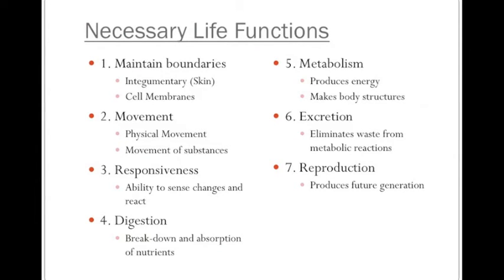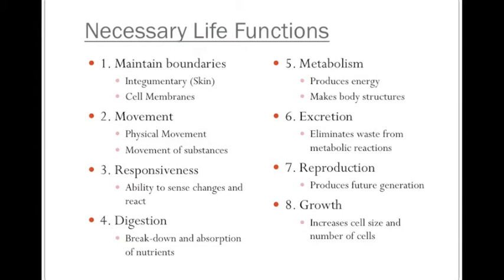Number seven would be our ability to reproduce. This is producing future generations, which is important for the species, but not every human has to reproduce to maintain life. This is where I have to remind you that the levels of structural organization are absolutely important and that we are nothing but chemicals that make up cells — our cells have to be able to reproduce. And finally, along the same lines, the ability for our cells and tissues to grow, so we need to be able to increase our cell size and number of cells.